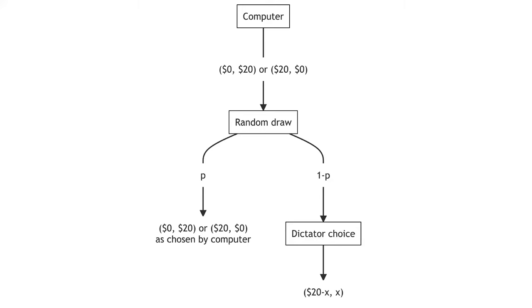One example of this comes from Andrioni and Bernheim, 2009, who ran a non-anonymous dictator game. Each dictator was endowed with $20. A computer then chose a distribution between the dictator and the receiver, selecting either 0, 20 or 20, 0 with equal probability. The dictator observes the allocation chosen by the computer, but the receiver does not.